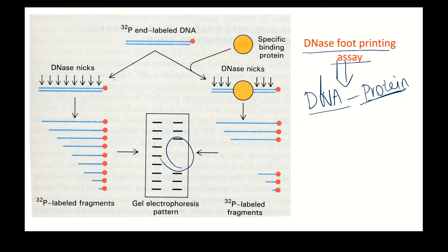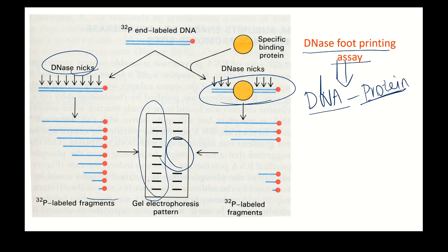In the DNA footprinting assay, DNA alone is cleaved everywhere by DNase I giving a full pattern. When a protein binds specifically to a certain region of DNA, that region is protected from DNase I cleavage, leaving a gap in the pattern that looks like a footprint. So DNA footprinting is used to find DNA-protein interaction.